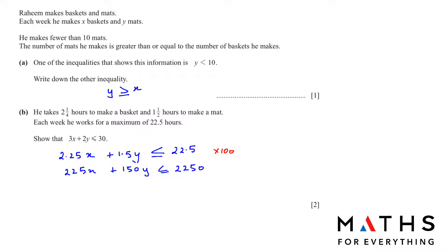Now divide everything to simplify to the required form. Divide the first coefficient 225 by 3 to get 75, so divide everything by 75: 225 ÷ 75 = 3, 150 ÷ 75 = 2, 2250 ÷ 75 = 30. This gives 3X plus 2Y less than or equal to 30, which is what we wanted to show.